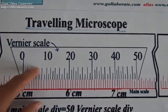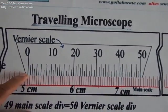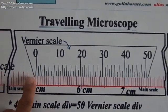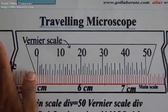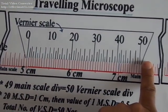49 main scale divisions is equal to 50 vernier scale divisions, starting from here up to here.